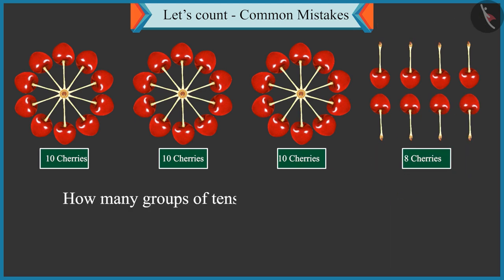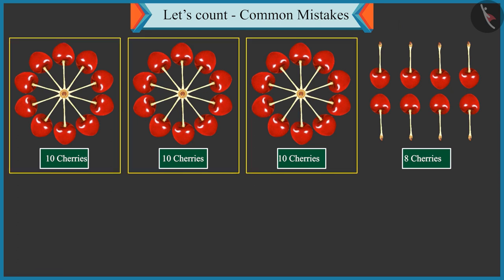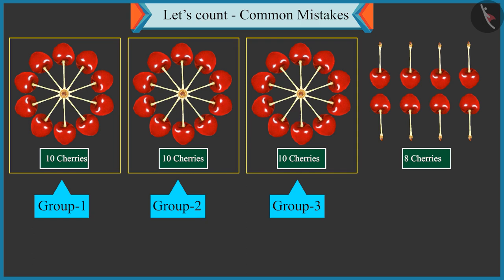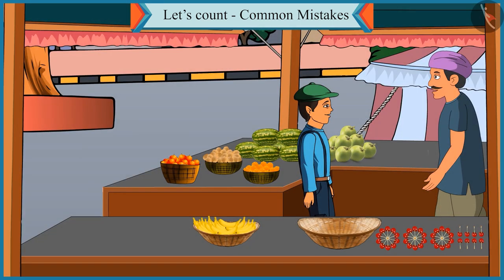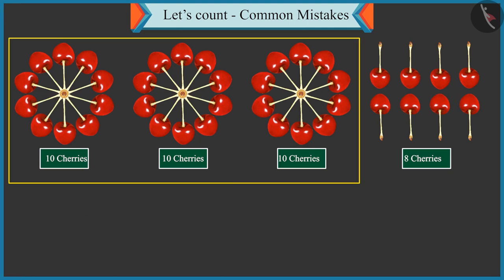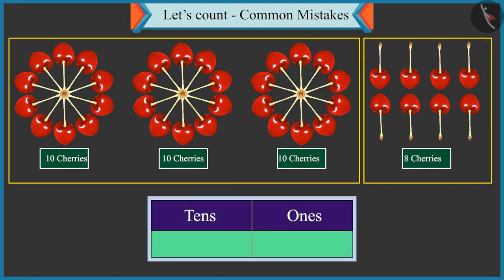How many groups of tens were made with these cherries? There are 3 groups of 10 cherries here. Now tell me, how will you write 3 groups of tens and 8 single cherries in the form of tens and ones?